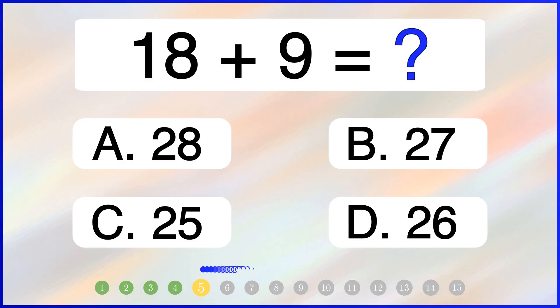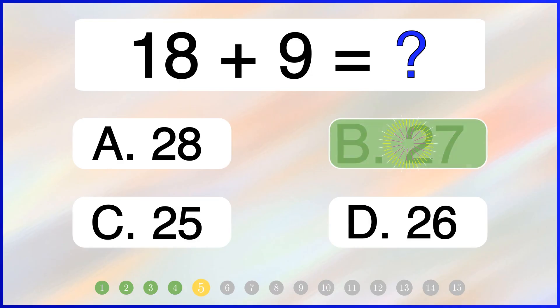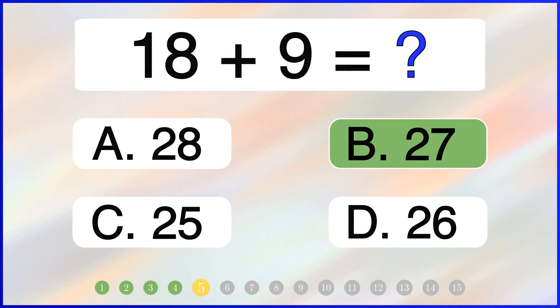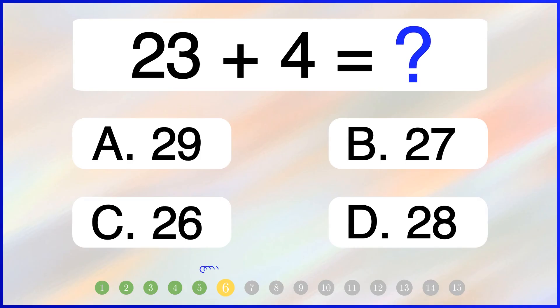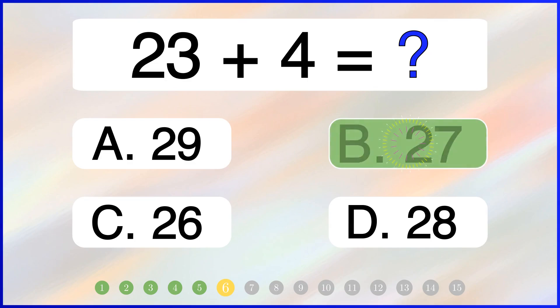Solve 18 plus 9. The correct answer is 27. What is 23 plus 4? The correct answer is 27.